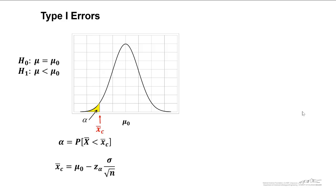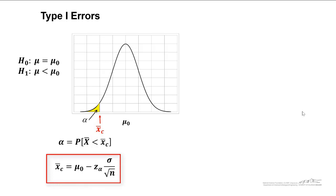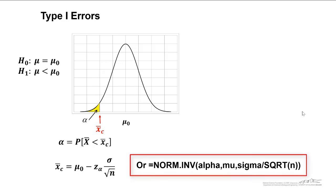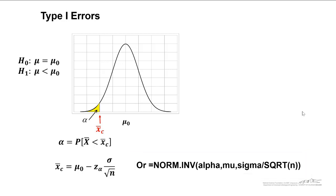A type 1 error will occur if we are below this critical x bar, x bar c. We can determine that by taking z alpha times sigma divided by square root of n and subtracting that from mu naught. This is essentially the lower bound of an upper tailed confidence bound. We can also use the norm.inv function in Excel. In either case, this is how we calculate the critical sample average that we would have to be below in order to accept the alternate hypothesis.